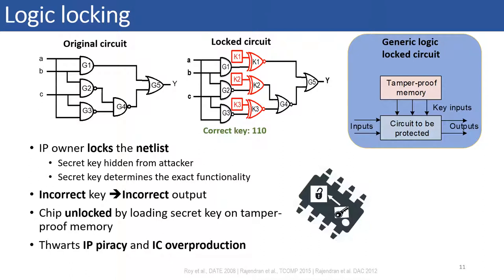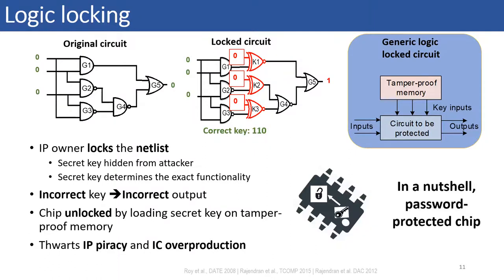Now, let me provide you all with an example to explain logic locking. Consider the original circuit developed by trusted designer. Using logic locking as a design for trust solution, the IP owner locks the original circuit or netlist using additional gates, commonly known as key gates. The input of these key gates is called as key input. Consider an all zero pattern applied to the original circuit whose correct response is bit zero. Now, for the correct key, the locked circuit functions correctly and outputs a bit zero for the same input pattern. But for an incorrect key, the locked circuit functions incorrectly. So, in short, with logic locking, the circuit is converted into a password-protected chip and thwarts IP piracy and IC overproduction attacks.